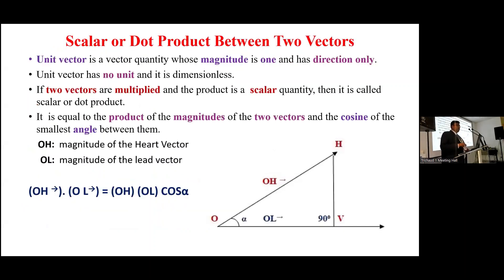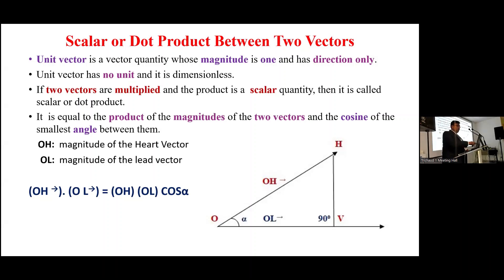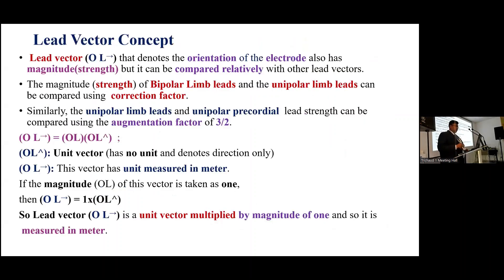A unit vector is a vector quantity whose magnitude is 1, denoting direction only. It has no unit and is a dimensionless quantity. The scalar or dot product between two vectors: if two vectors are multiplied and the product is a scalar quantity, it is called the scalar or dot product. It equals the product of the magnitudes of the two vectors and the cosine of the smallest angle between them. In the right-angled triangle, the OH vector is the heart vector and OL is the lead vector. The dot product OH·OL equals OH times OL times cosine of the angle between them. The lead vector denotes the orientation of the electrode and has magnitude of strength that can be compared relatively with other lead vectors.